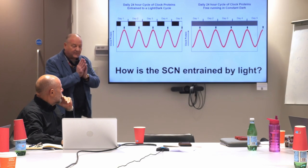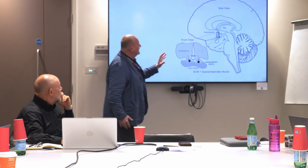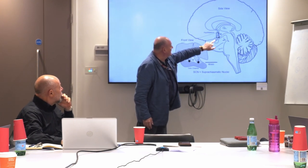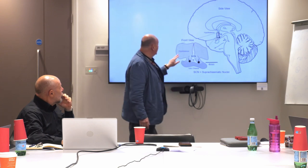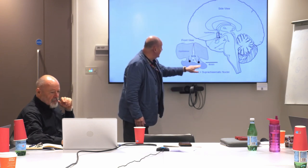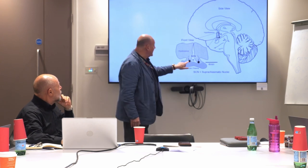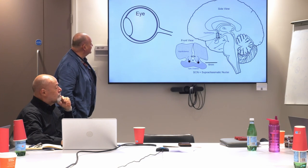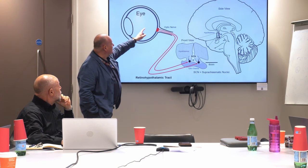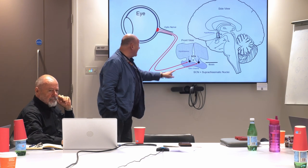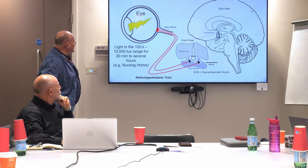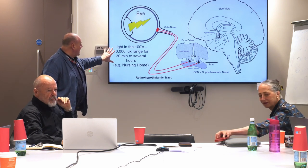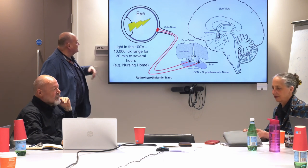How is the SCN — the master clock within the brain — entrained by light? Deep within the hypothalamus, here's the pituitary gland, the optic nerve, and just where the optic nerve comes in, you've got the suprachiasmatic nuclei. Here's the optic chiasm where the optic nerves fuse. This master biological clock is entrained by a direct projection from the eye called the retino-hypothalamic tract.